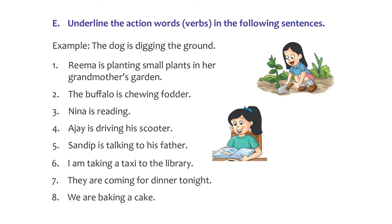Let's look at one or two examples from our exercise. In exercise E: 'The dog is digging the ground' — 'digging' is the action. The next one: 'Rima is planting small plants in her grandmother's garden' — what is Rima doing? Rima is 'planting', so 'planting' is the verb or action word. In a similar manner, go ahead and read the sentences and underline the action words.